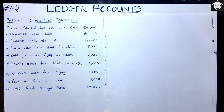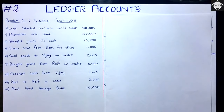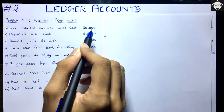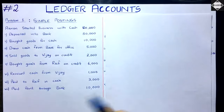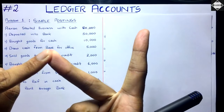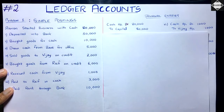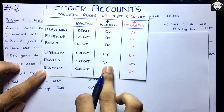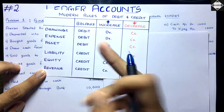Now let's get back to the second video and solve this example. First, let's see the journal entries of the transactions. The first transaction: Aaron started business with cash 80,000. Two accounts are involved — cash and capital. Both are increasing. So the journal entry is: Cash Account debit, to Capital Account 80,000. Capital has a credit balance, so to increase capital you credit it, and cash is an asset so you debit it.